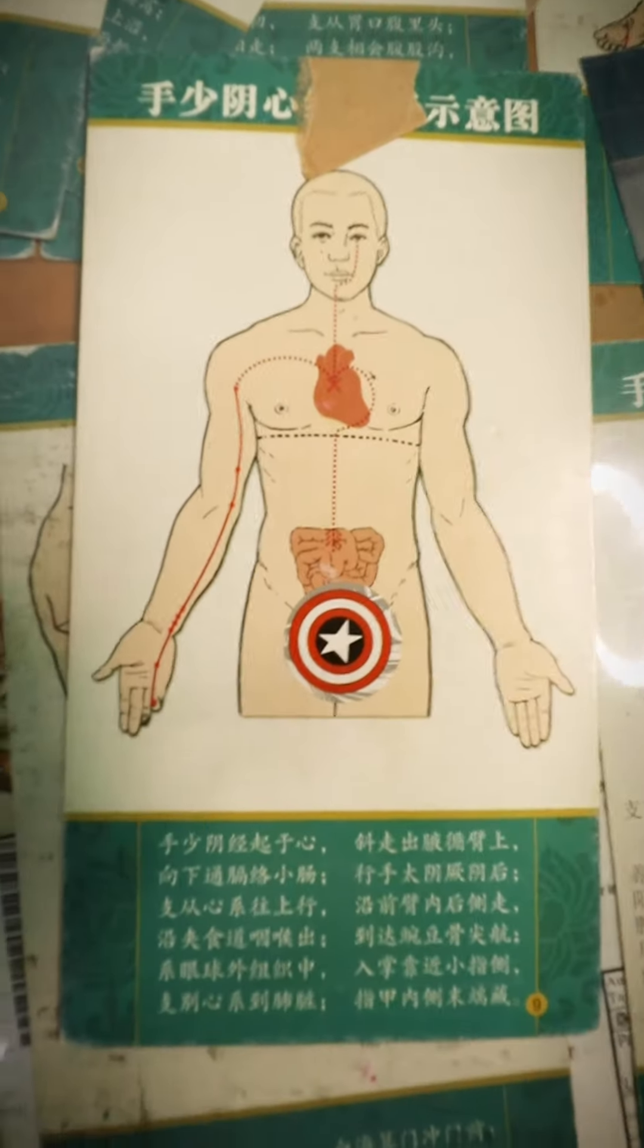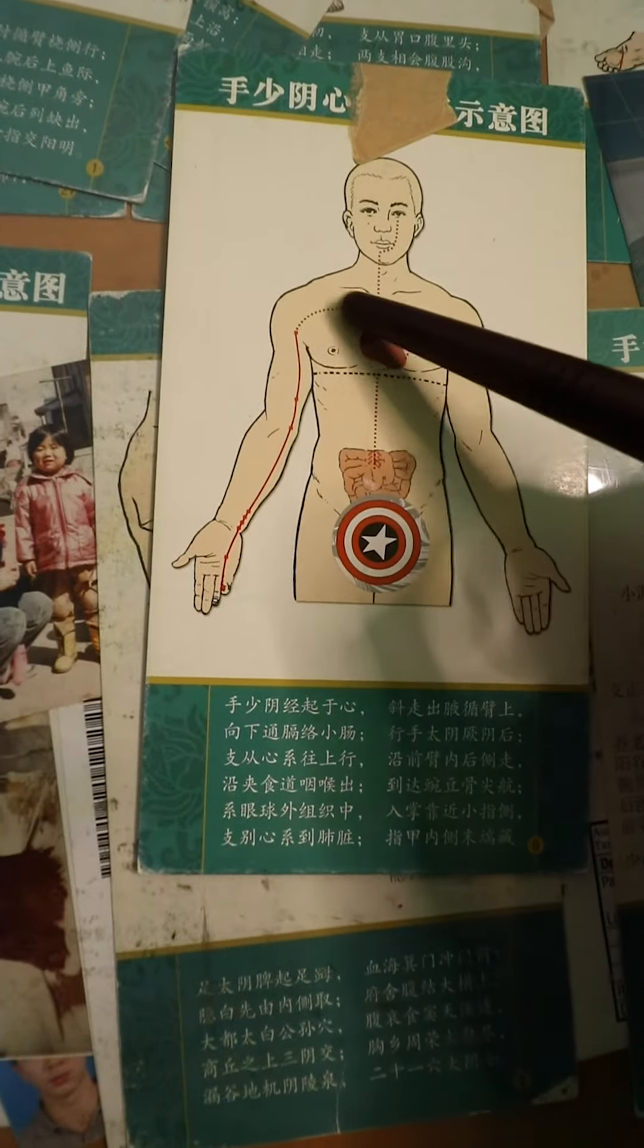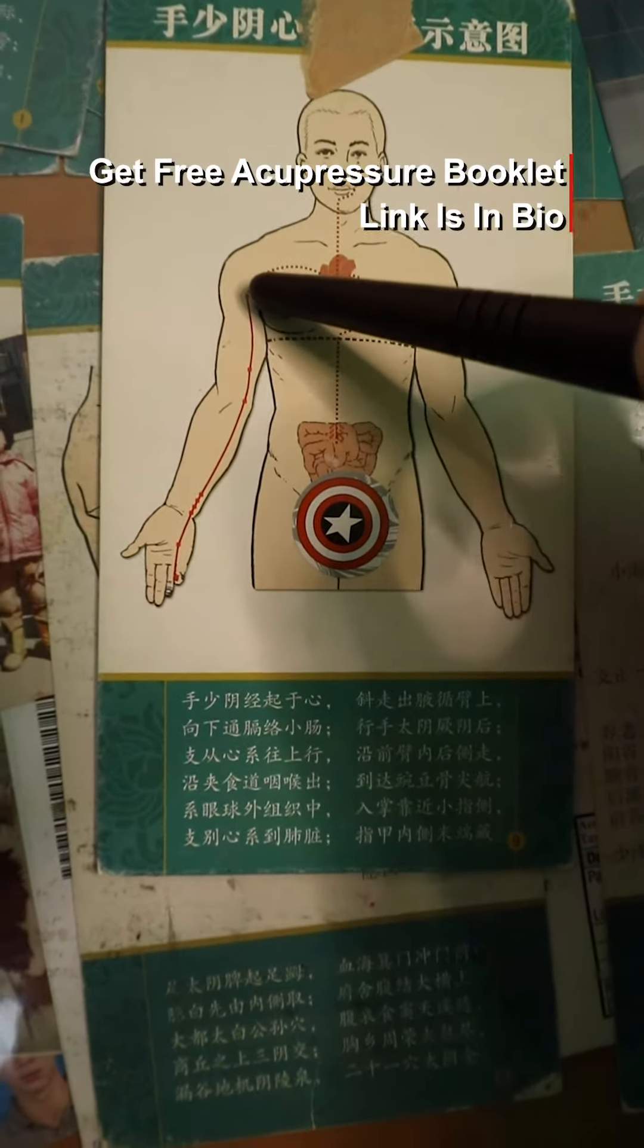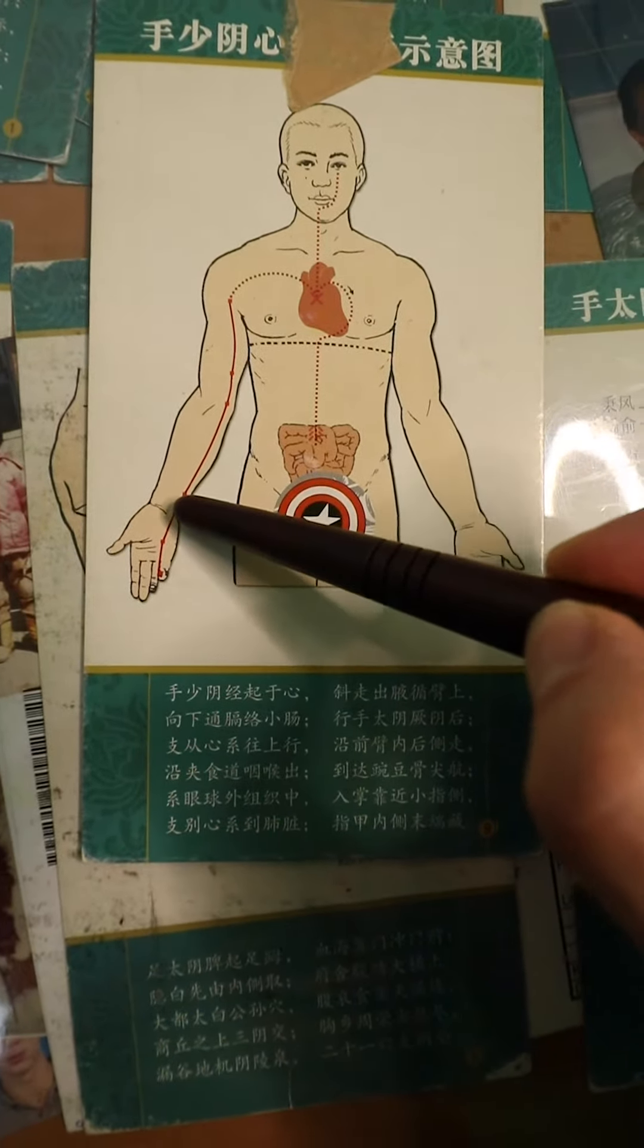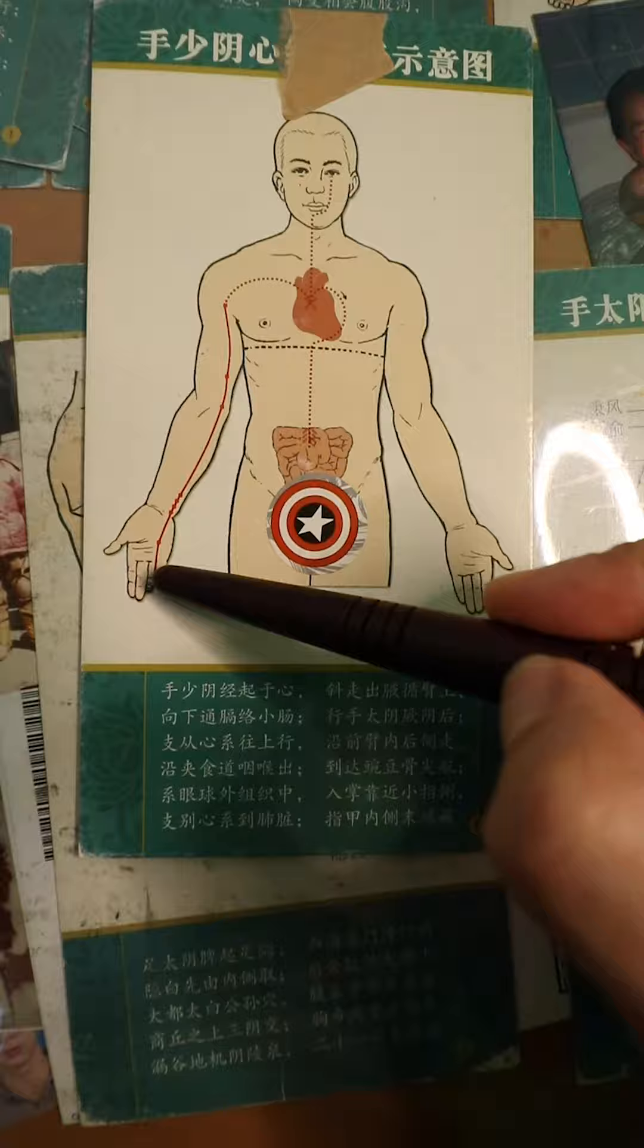The heart channel nerve pathway starts at the armpit, goes through there into the elbow, all the way on the ulnar side, and then ends at the pinky.